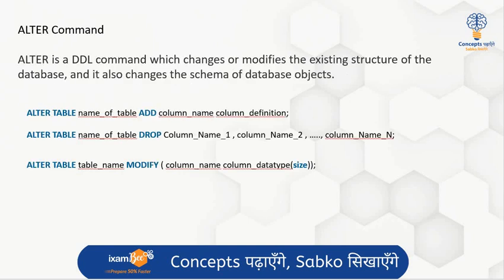The next command is ALTER. ALTER is also a DDL command and it is used for modifying something that already exists. Sometimes we want to change the existing structure of the database and modify the schema of its objects. Using the ALTER TABLE command, you specify the table name and then choose to ADD a new column, DROP an existing column, or MODIFY the data type or size of an existing column. These are the three operations you can perform with the ALTER TABLE command.